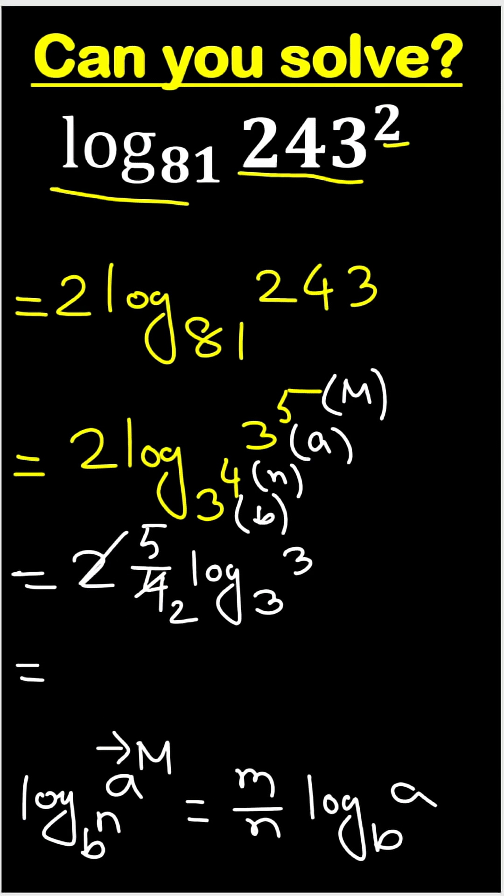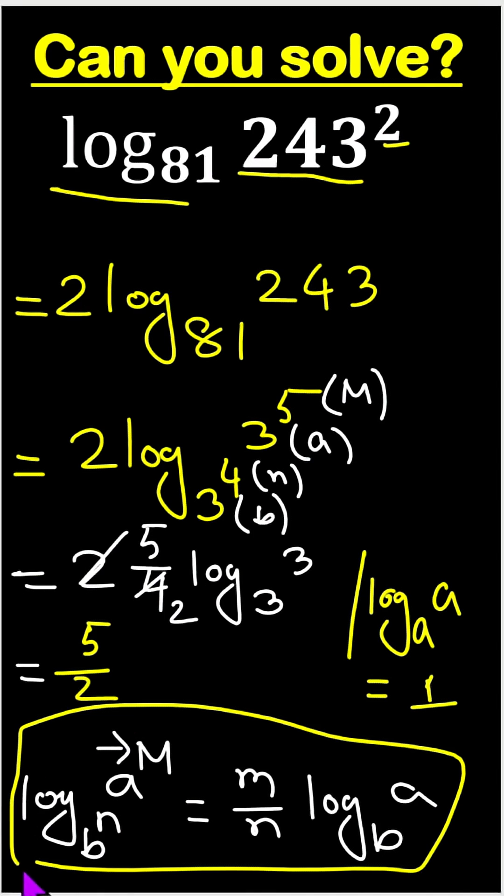So we can write 5 by 2. Because log base a of a equals to 1. It's looking a little complex, but you have to know the rule of property. So our answer is 5 by 2. Thank you.